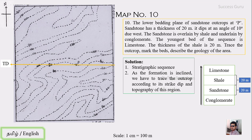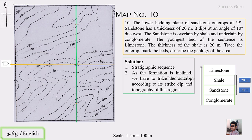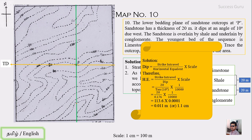The first step is now complete — we've marked the true dip direction. Next, we mark the strike direction, which is 90 degrees from dip. We can plot points on both the northern and southern sides, 90 degrees from the center line — this gives us the first strike for the lower trace of sandstone. To find the second and third strikes, we calculate the horizontal equivalent using the same equation as previous maps. The contour interval is 20 meters, the dip is 10 degrees, and the scale is 1 cm = 100 meters (i.e., 1:10,000).